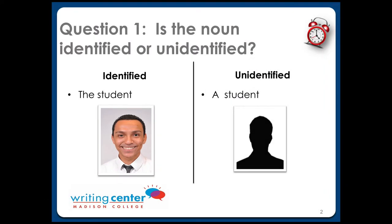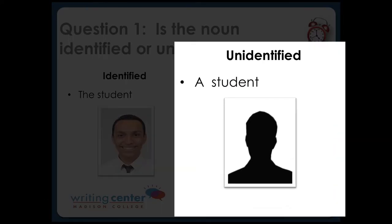But if you look on the right, you'll see an unidentified image. When a writer wants to talk about a noun in general, or a noun that doesn't have an identity, they should put 'a' or 'an' in front of it — like here, 'a student.' It really depends on the writer's purpose.